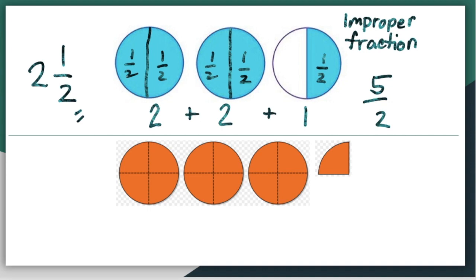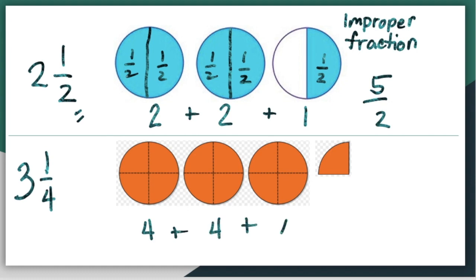Let's take a look at another example. What is the mixed number represented in this picture? We have one whole, two wholes, and three wholes. So the whole number is three. And the fractional part is a quarter, or one-fourth. Now, how about expressing this mixed number into an improper fraction? How many quarters do we have in one whole? We got four quarters, another four quarters, and another four quarters, and lastly one quarter. Adding all together: four, eight, twelve, thirteen quarters, or thirteen over four. So three and one-fourth is the same as thirteen over four.